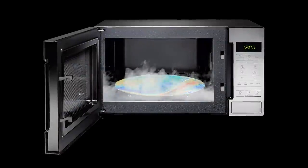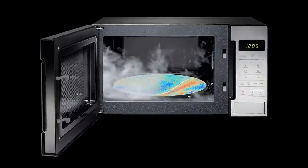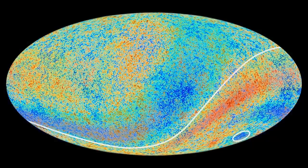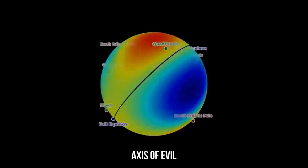That's what our universe looks like if you look at it through a device that detects microwave background radiation. The blue color indicates low temperature areas and orange high temperature. But what is this strange line here? Scientists call it the axis of evil.